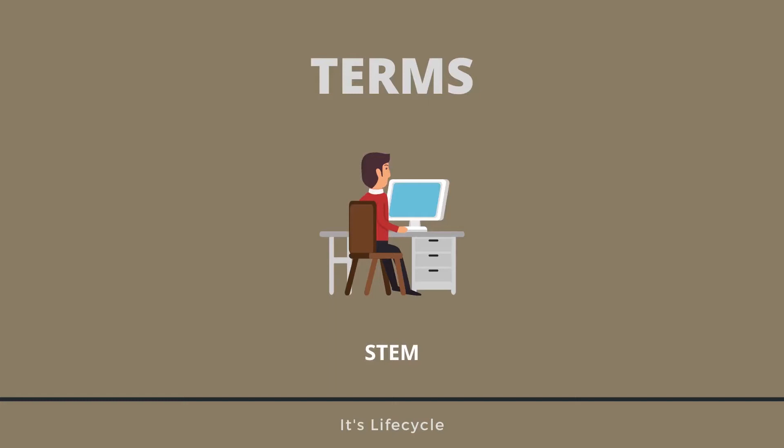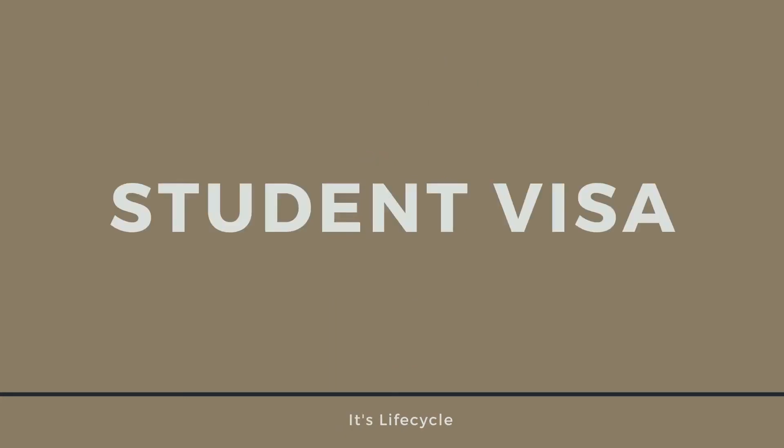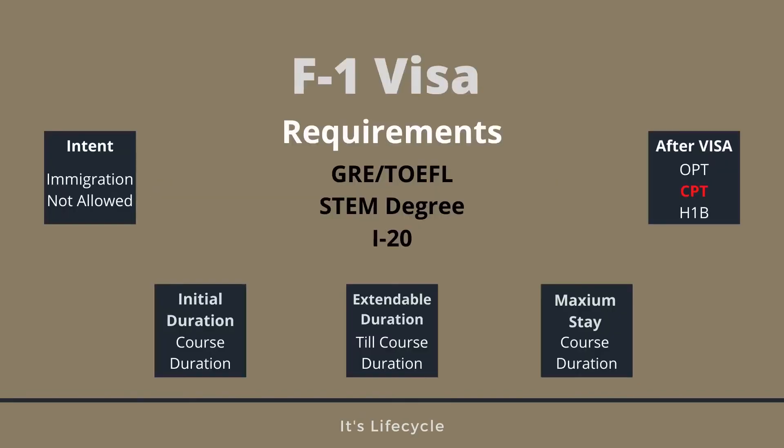Now let's talk about visas. First, let's talk about F-1 visa. F-1 visa is a very important visa — in India, we have a lot of F-1 visa applicants. F-1 visa is about STEM education — science, technology, engineering, and mathematics background. F-1 visa covers bachelor's, master's, and PhD programs.